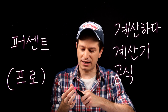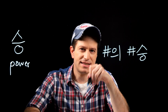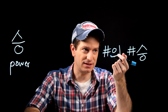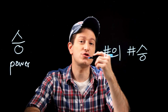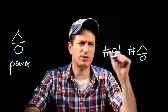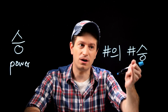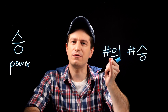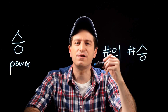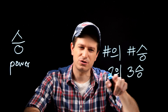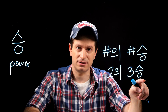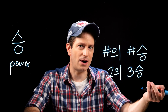One more thing: to say that something is to the power of something — for example, something squared, which is to the power of two — what you're literally saying is 'the number's power of whatever number.' If you wanted to say two to the power of three, that would be 이의 삼승 — two's three power. Everything in this video is pretty common knowledge in Korea.